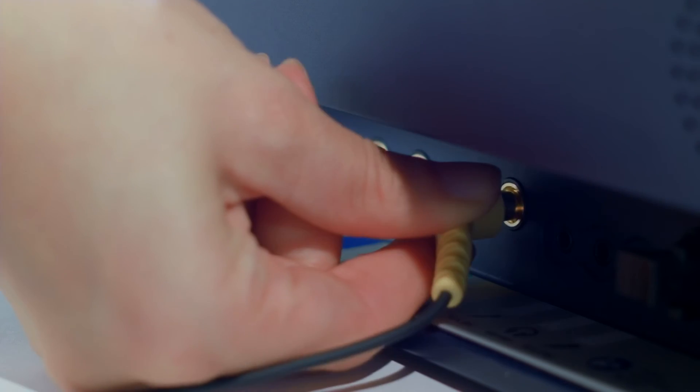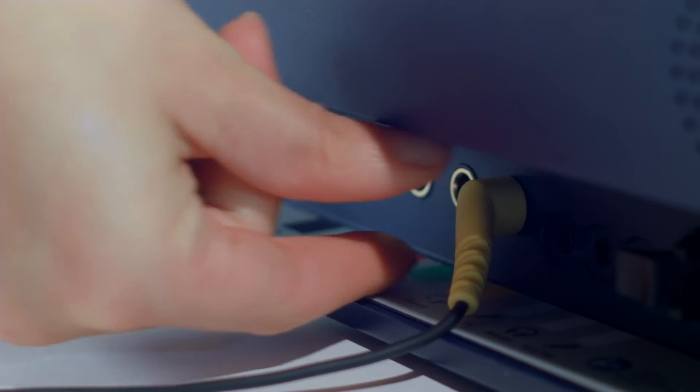Connect the contralateral phone to the yellow jack labeled Contra. Place the contralateral phone carefully on the opposite ear of where the probe is placed on the patient.